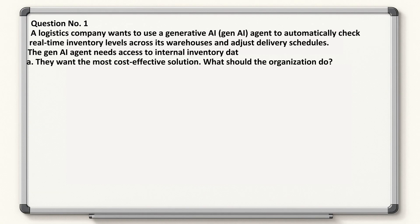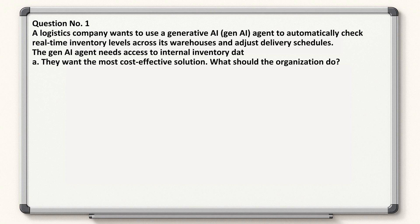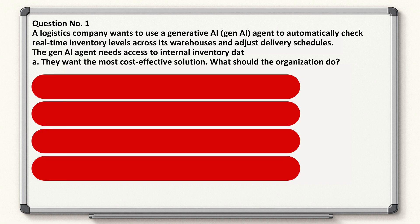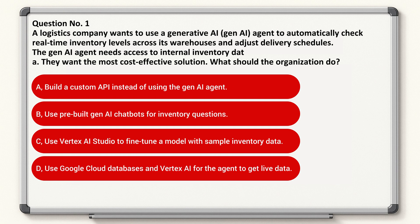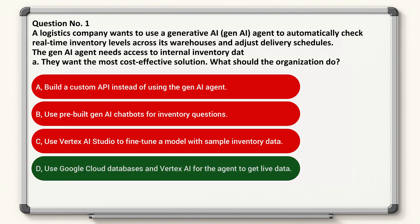Question number one: a logistics company wants to use a Generative AI agent to automatically check real-time inventory levels across its warehouses and adjust delivery schedules. The agent needs access to internal inventory data, and they want the most cost-effective solution. What should the organization do? Correct answer is D.